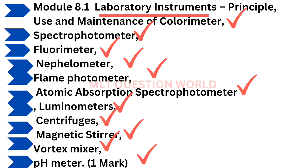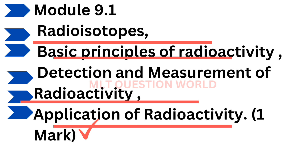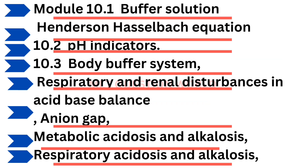Then laboratory instruments — principle, use and maintenance of colorimeter, spectrophotometer, fluorimeter, nephelometer, flame photometer, luminometer, centrifuge, etc. Then module 9.1: radioisotopes, basic principles of radioactivity, application of radioactivity, detection and measurement of radioactivity.